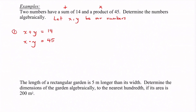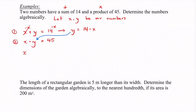If I can make two equations and there are two things I'm looking for, I'm definitely going to be able to solve it. What we want to do is substitute one equation into the other. Taking the first equation, I'm going to subtract x from both sides so that I have y equals 14 minus x. And I'm going to take that and put it in where I see y in the second equation, so x times (14 minus x) equals 45.